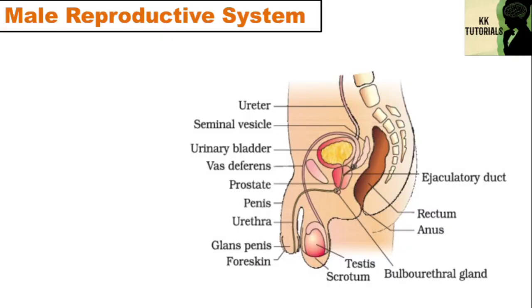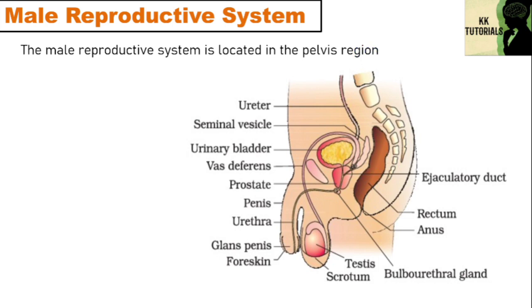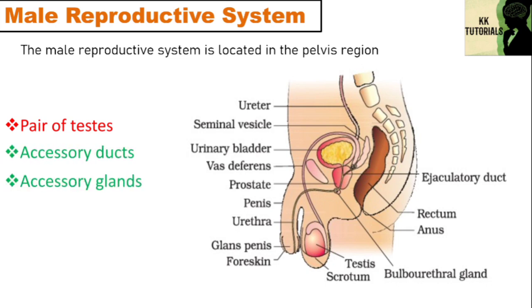The male reproductive system is located in the pelvis region. It includes a pair of testes, along with accessory ducts, accessory glands and the external genitalia.